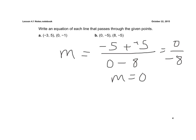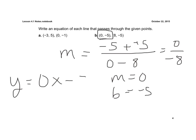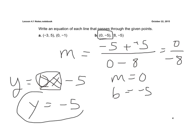And then again, this is my y-intercept, so my b is negative 5. So I'd have y equals 0 times x minus 5. But with a 0 slope, that term goes away. So this actually happens to be the horizontal line y equals negative 5.